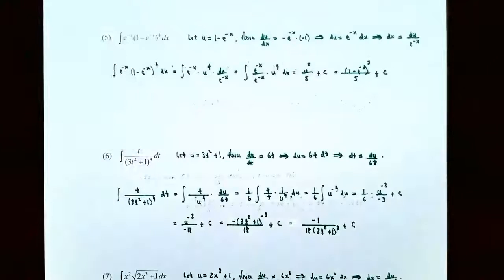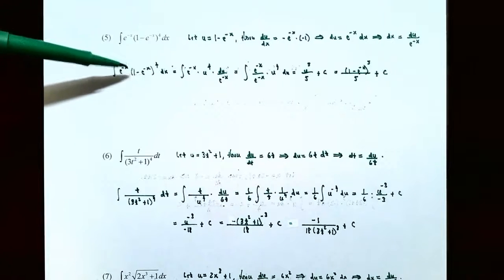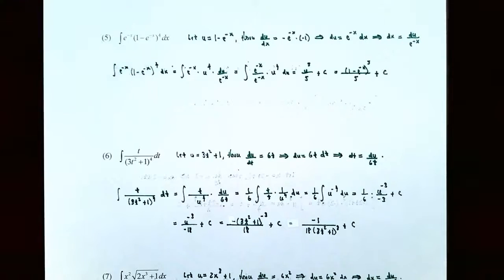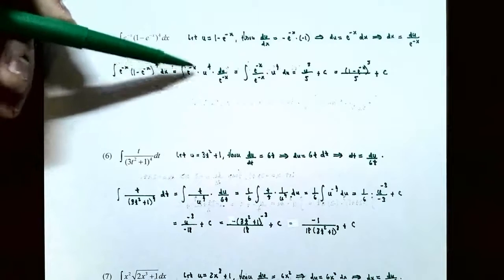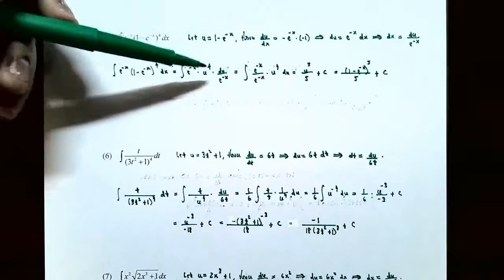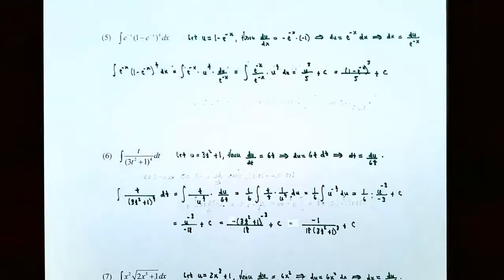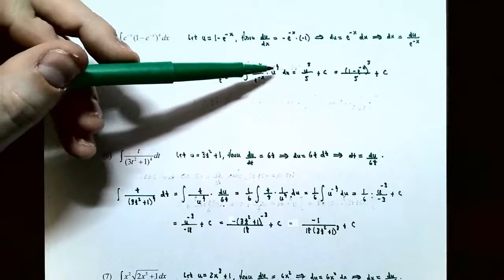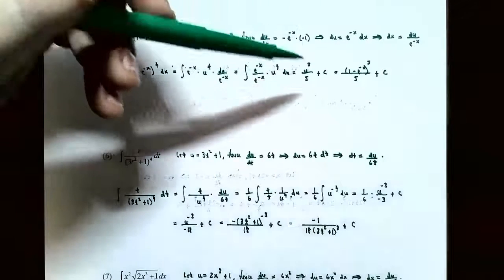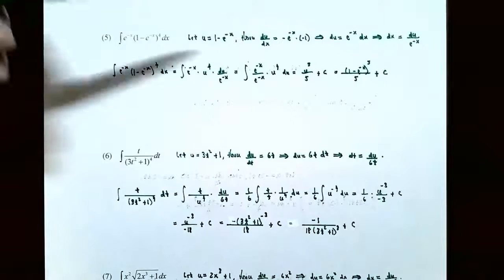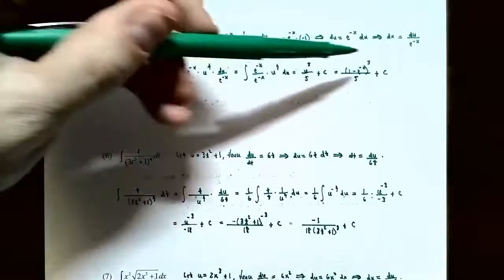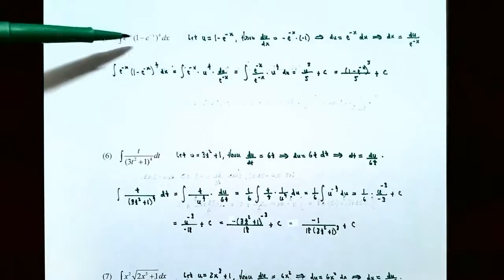Go back to the original integral and change everything in terms of u and du. Replace (1 minus e^(−x)) with u to get u^4, and replace dx with du / e^(−x). The e^(−x) in the numerator and denominator cancel out, leaving just the integral of u^4 du. Using the power rule, the antiderivative is u^5 / 5 plus C. Replacing u with 1 minus e^(−x) gives (1 minus e^(−x))^5 / 5 plus C.